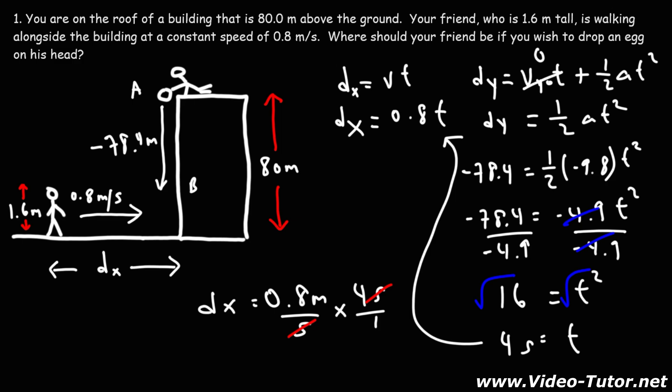So we're going to get the distance in meters. We know that 8 times 4 is 32. So 0.8 times 4 is going to be 3.2. So that's how far he needs to be from the building when you release the egg from rest.